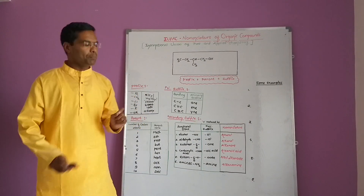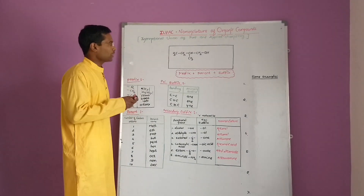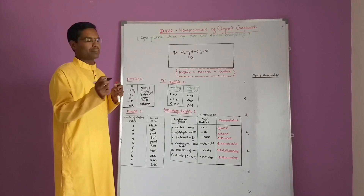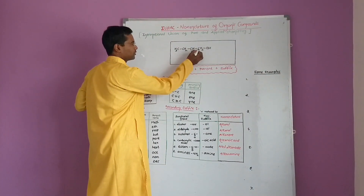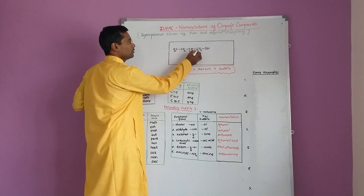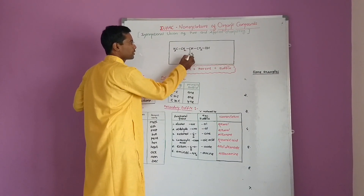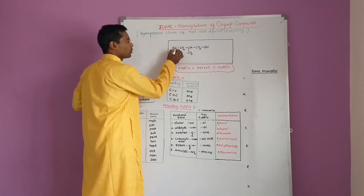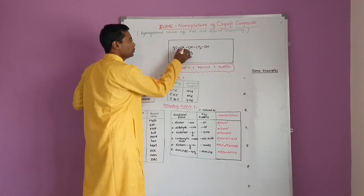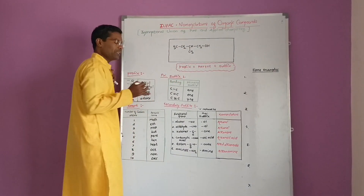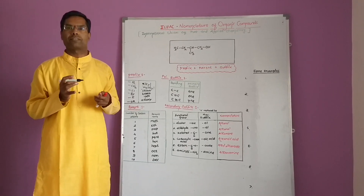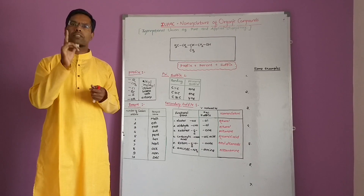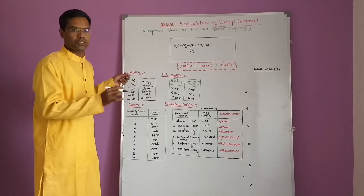The first rule: select the longest continuous carbon chain. Looking at the carbon chains — there are three possible carbon chains of lengths one, two, three, and four — but we must select the longest continuous carbon chain containing the functional group. In this example there are three carbon chains, but we select the longest one, which has four carbons.